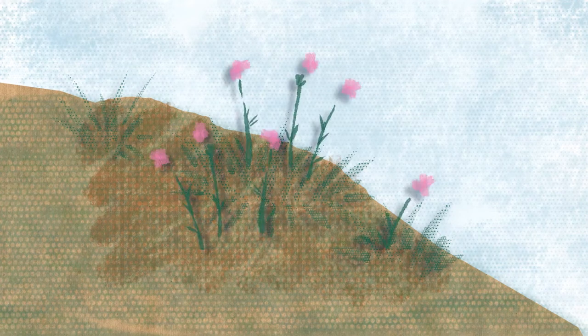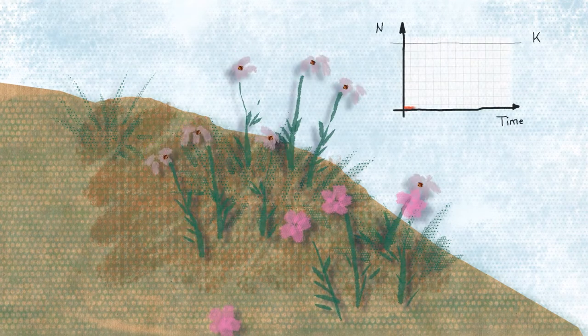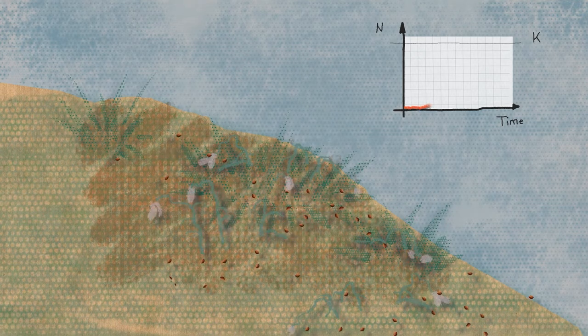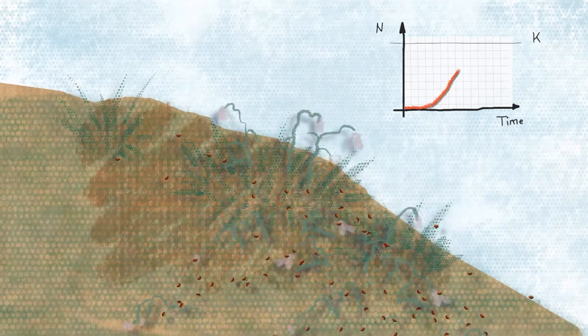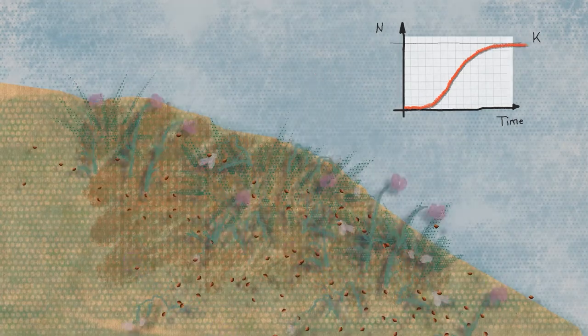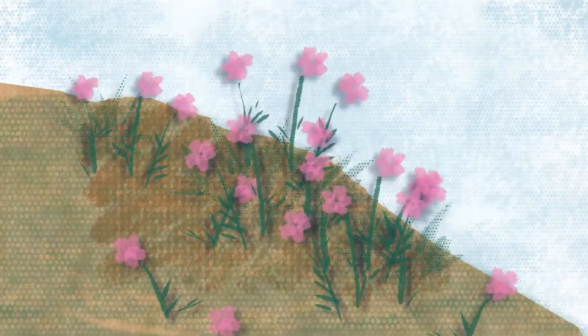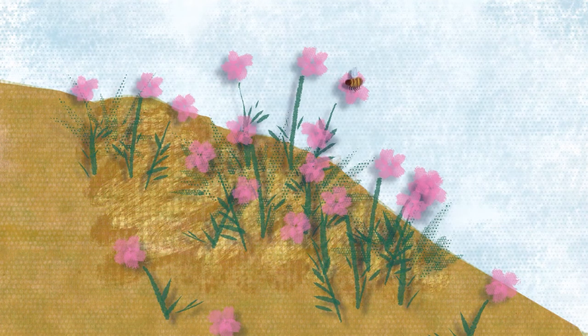When the species is living in favorable conditions, the population will grow until it reaches what we call the carrying capacity of its environment, which depends on the quantity of resources available to grow. However, when the conditions change and become less favorable, the population may not survive anymore.